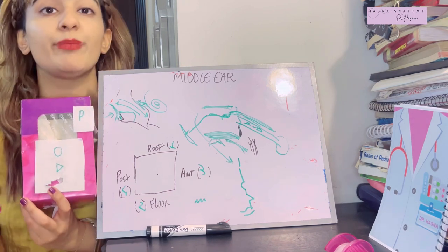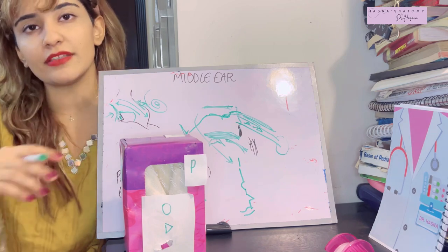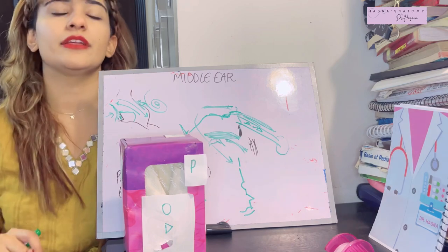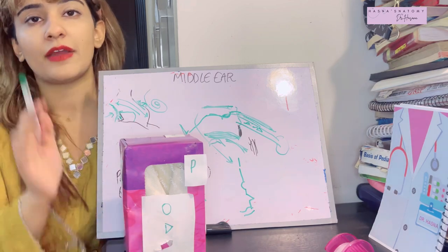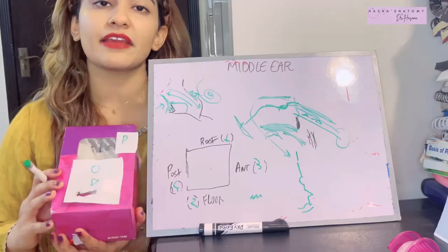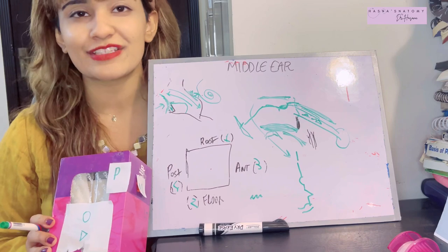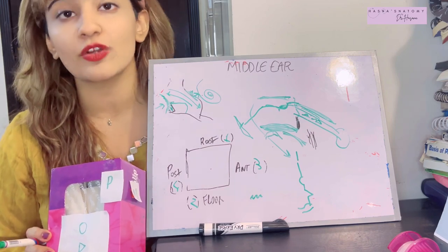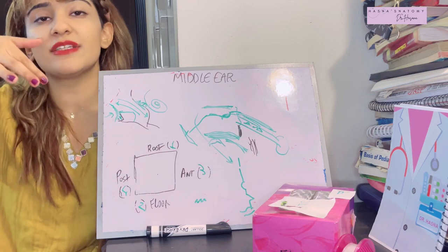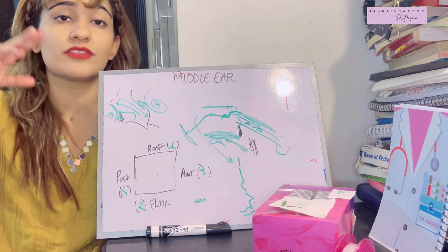The fourth content of the posterior wall is the posterior canaliculus, located lateral to the pyramid. This canal carries the chorda tympani nerve, which transmits taste sensation from the anterior two-thirds of the tongue and provides parasympathetic supply to the submandibular and sublingual salivary glands — it is a branch of the facial nerve.